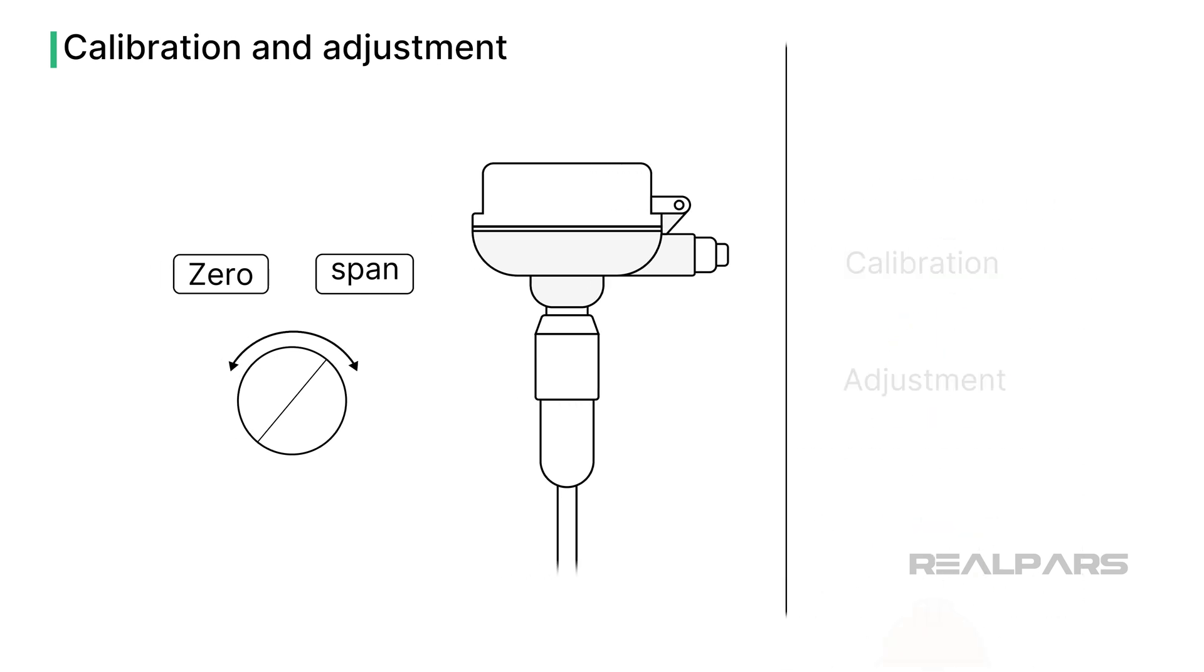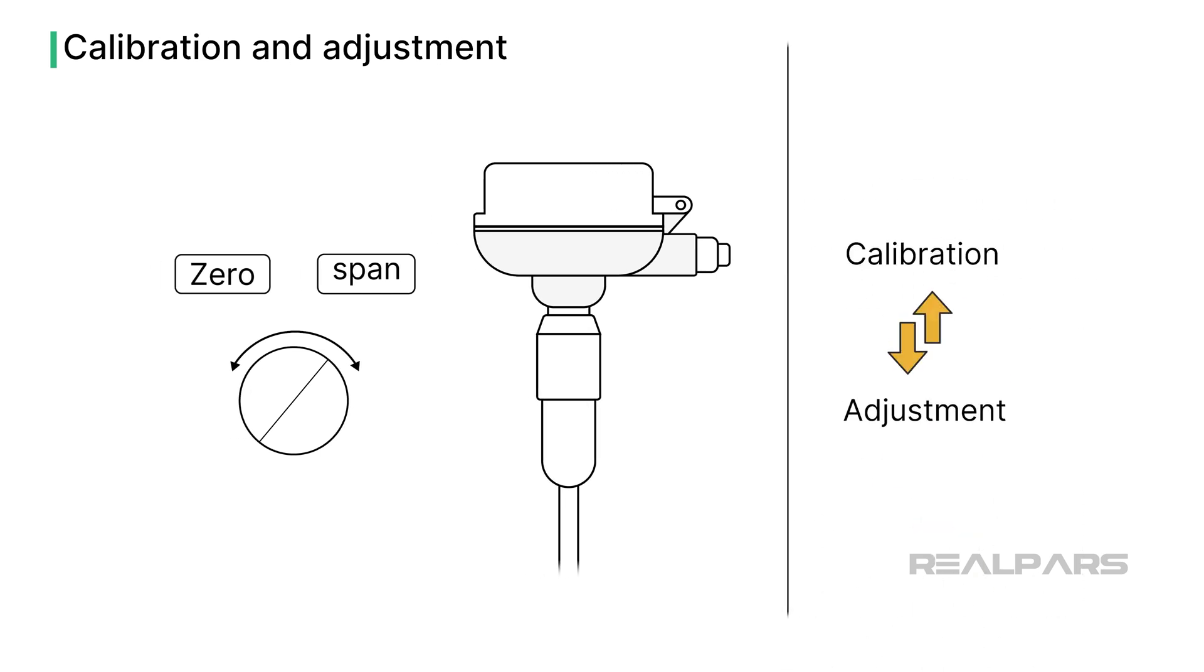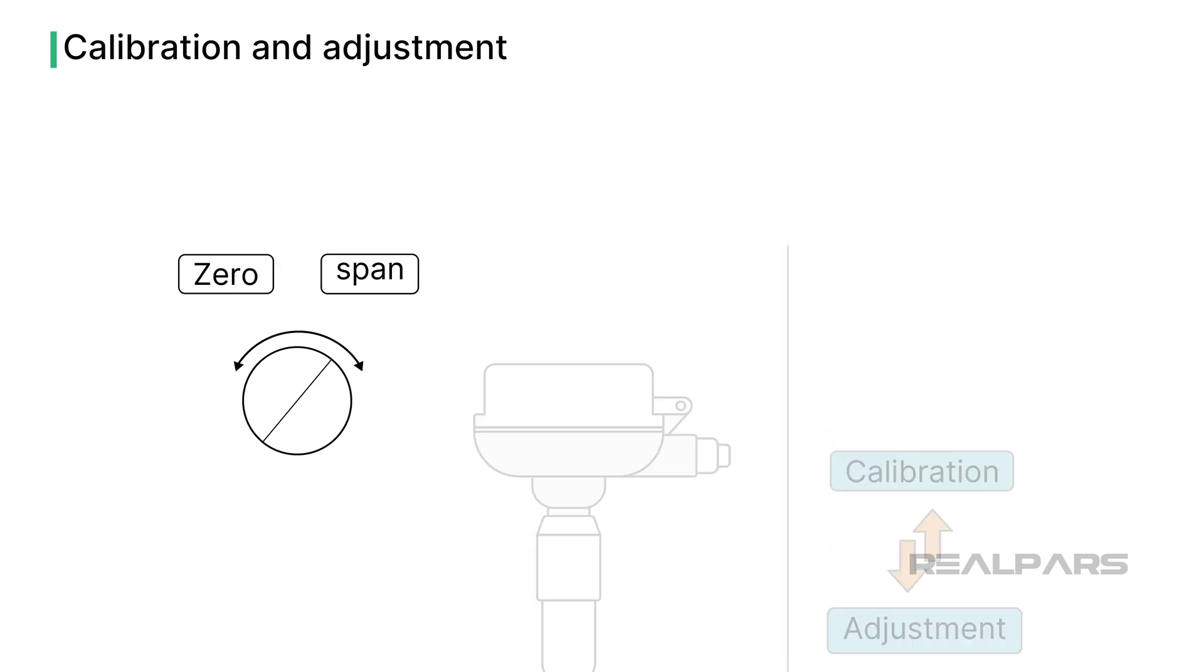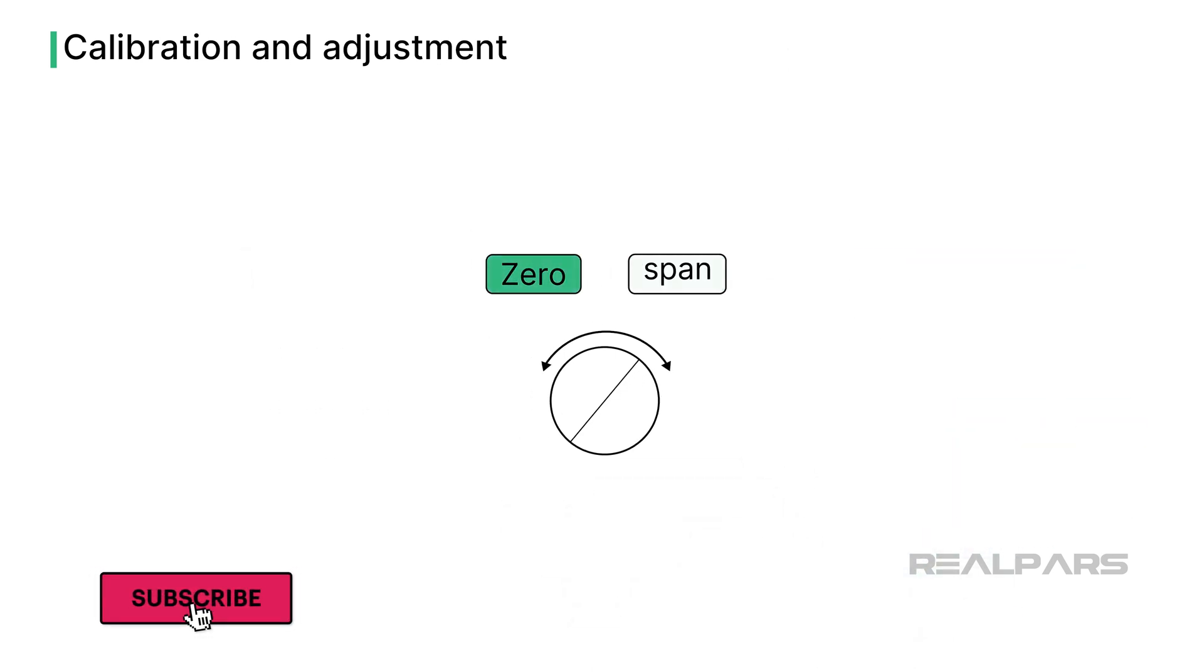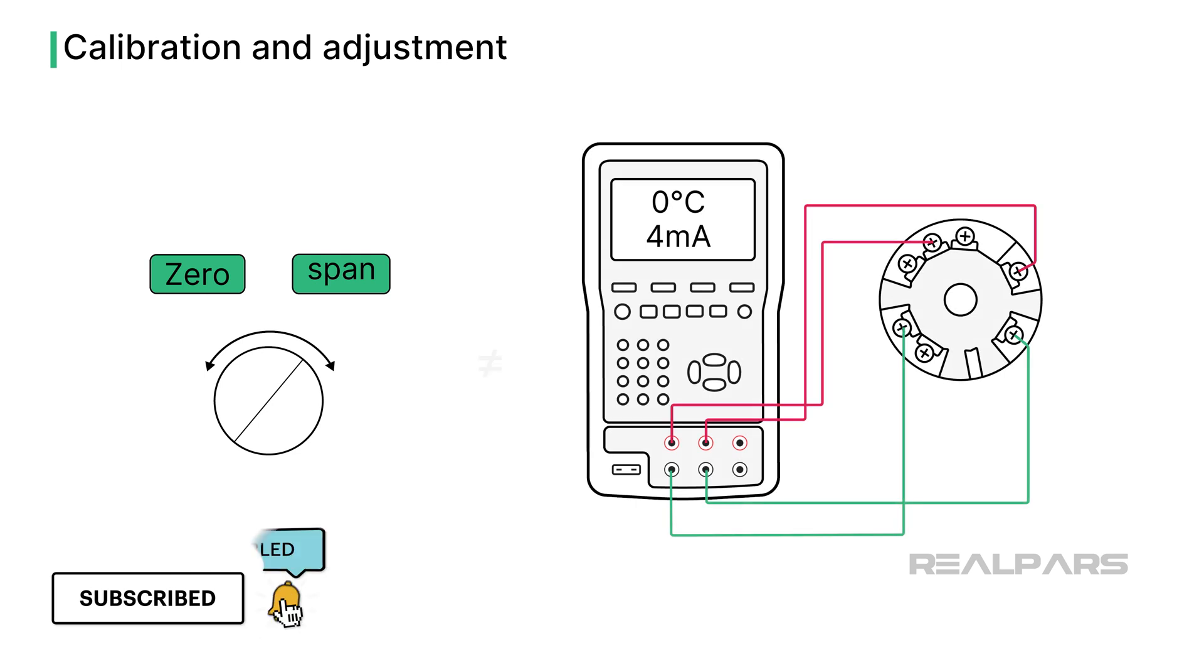To be accurate, calibration and adjustment are related but distinct concepts. So adjusting zero and span on a transmitter is not the same as calibrating the transmitter.